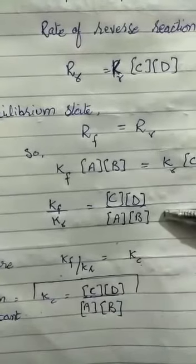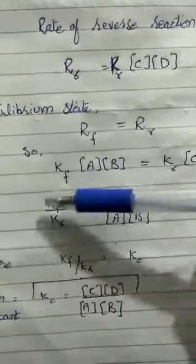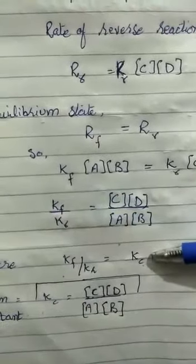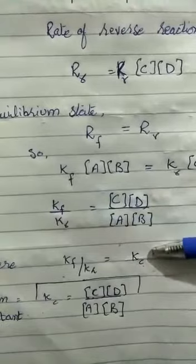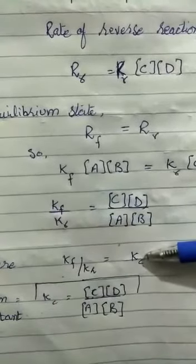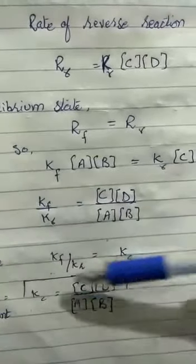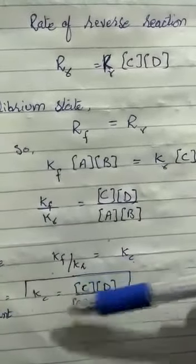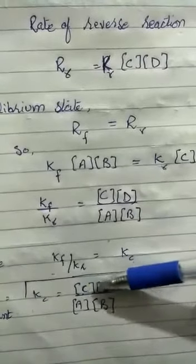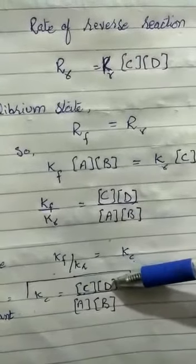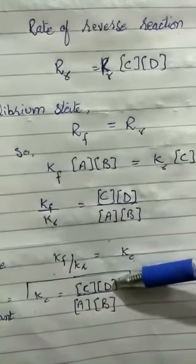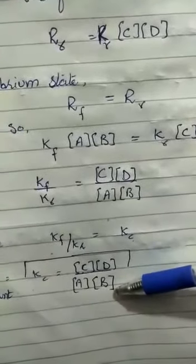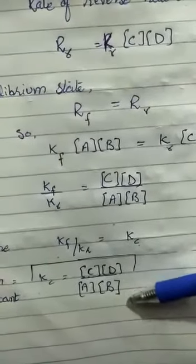We set Kf/Kr equal to Kc, where Kc is the equilibrium constant. Therefore, Kc equals the product of molar concentrations of products C and D, divided by the product of molar concentrations of reactants A and B.